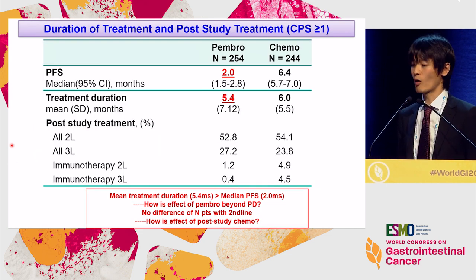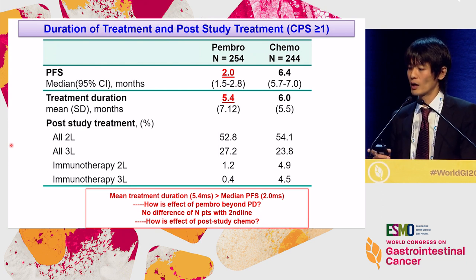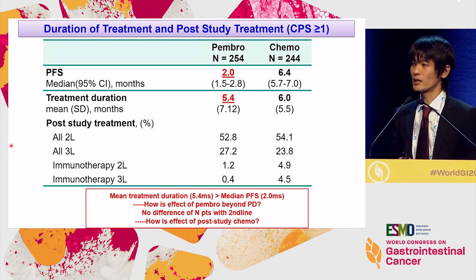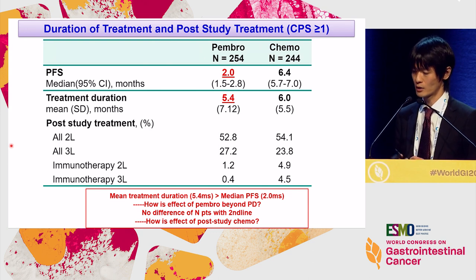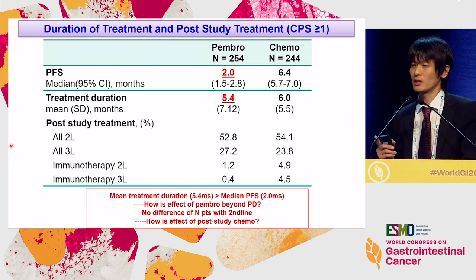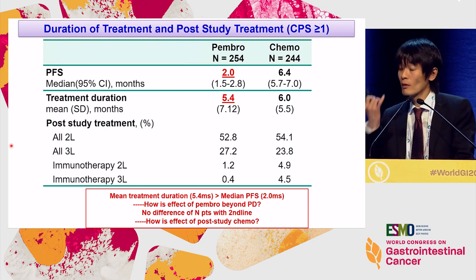Another discordance in Keynote 62 results is between median PFS and mean treatment duration. These were very similar in the chemotherapy arm, but more than three months different in the Pembrolizumab arm. This may be explained by the difference between median and mean, but it also suggests the possibility that not a few patients may have continued Pembrolizumab even after progressive disease at central assessment. The proportion of patients receiving subsequent therapy was very similar between both arms, making it very difficult to explain the survival post-progression difference.